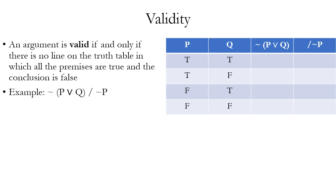To tell whether it's valid using a truth table, we start by constructing one. We only have two simple propositions, P and Q, so our truth table is going to have four rows. We need four columns total: one for each simple proposition P and Q, and one each for the two compound propositions — the premise and the conclusion tilde P.